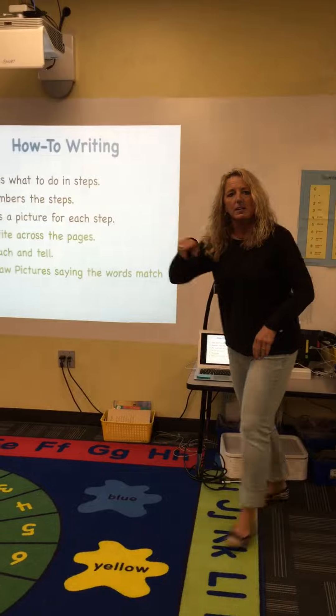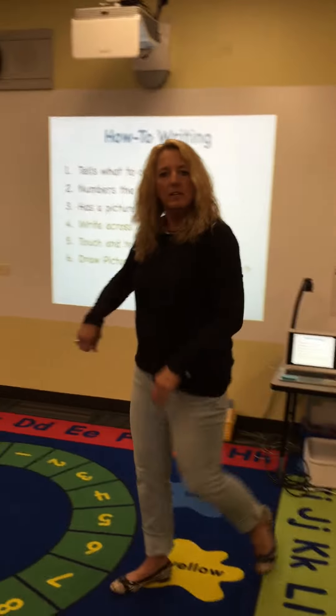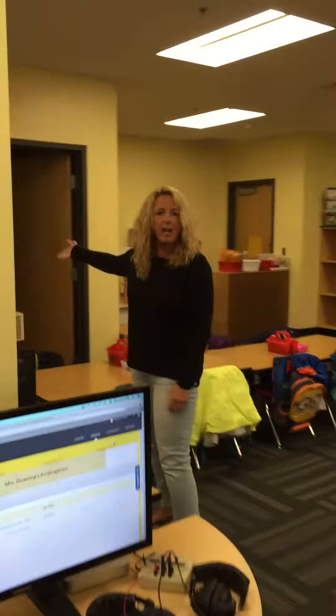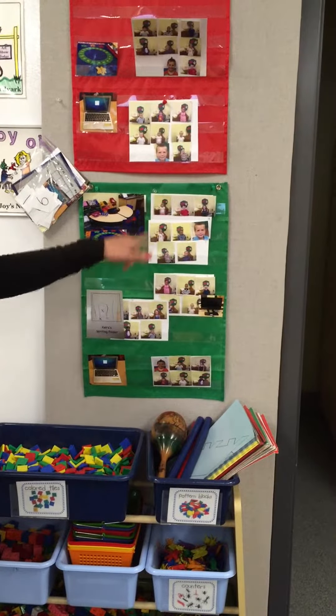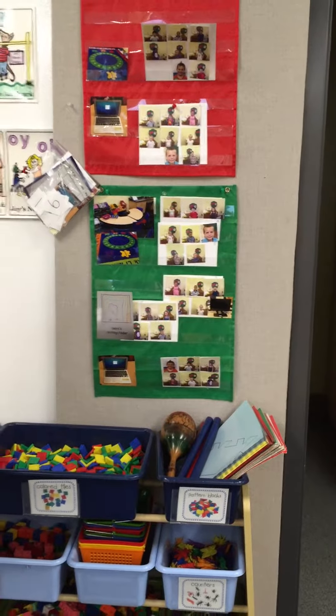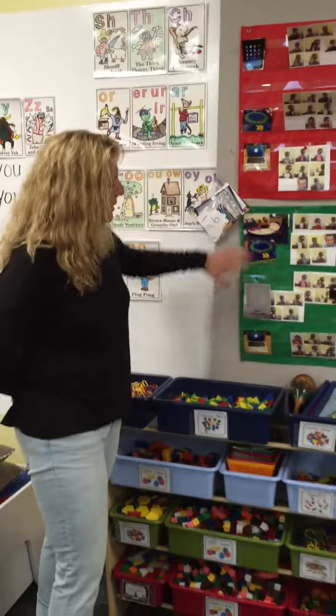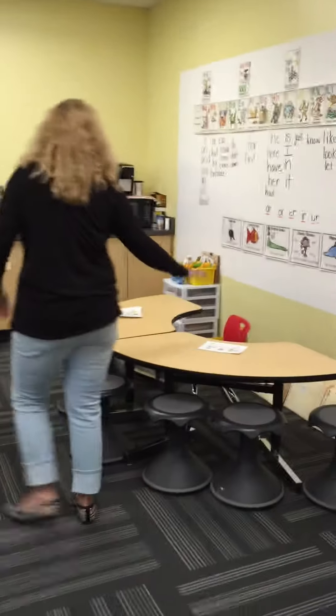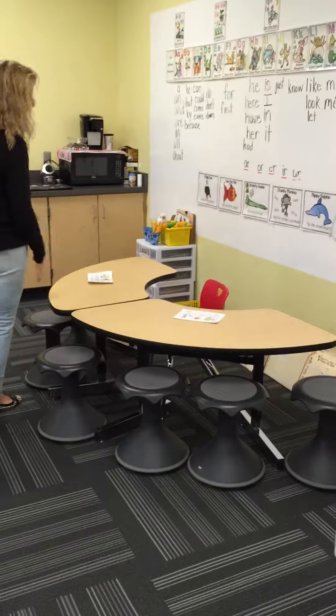In between those mini lessons, Sarah will dismiss the kids to their rotations, where she has a rotation board back here. The kids are in their level groups. Many times those groups may change depending on what she needs them to work on, and then pictured is the station where they are to go. Some of those stations include a guided reading group where she meets them at the back table.